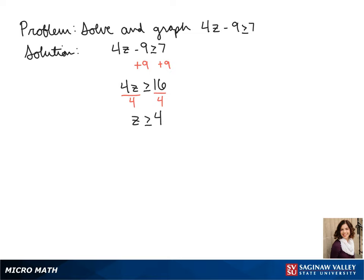To write this in interval notation, we know that z is anything greater than or equal to 4, so our interval will be from 4 to infinity. Since 4 is included in the interval, it gets a bracket.